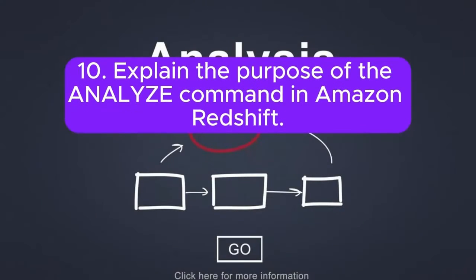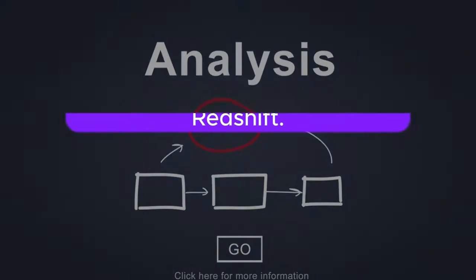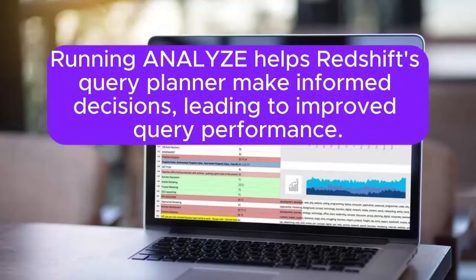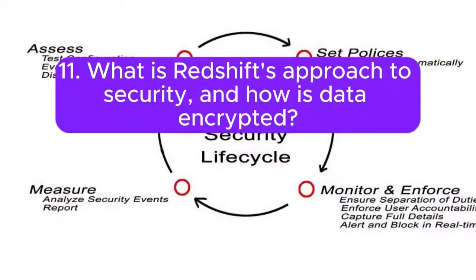Question 10: Explain the purpose of the ANALYZE command in Amazon Redshift. Answer: The ANALYZE command updates statistics about the distribution and sort order of tables. Running ANALYZE helps Redshift's query planner make informed decisions, leading to improved query performance.